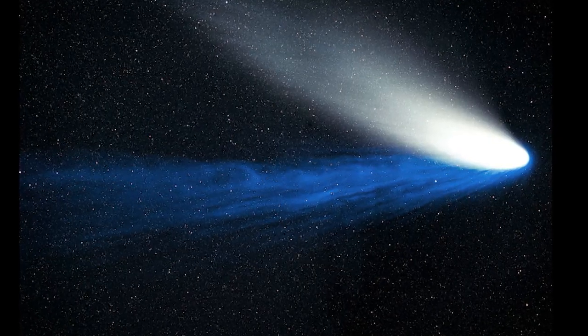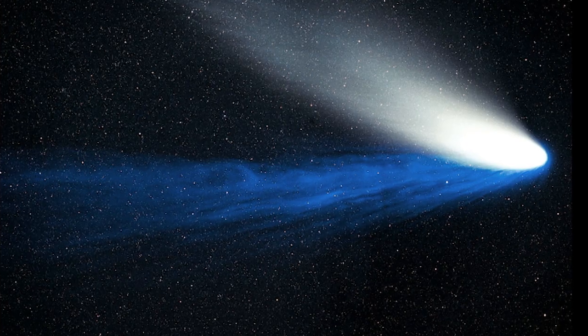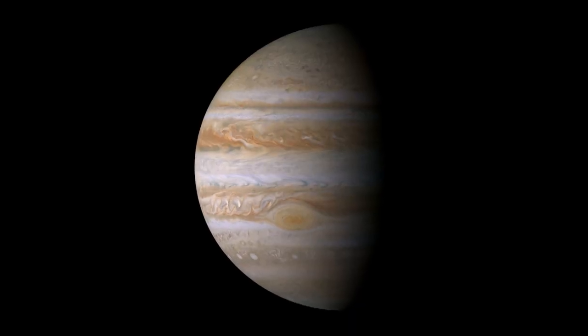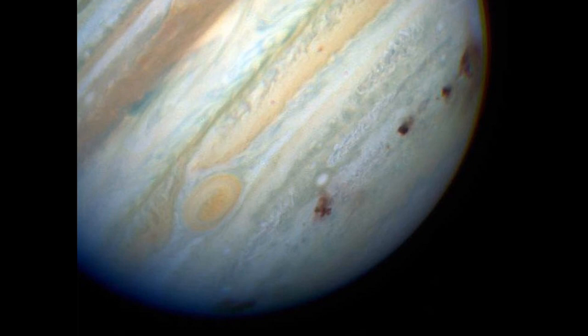And we've seen this happen. In 1994, the comet Shoemaker-Levy 9 got too close to Jupiter and was ripped apart by tidal forces. The comet fragments then smashed into Jupiter, creating several brown spots.